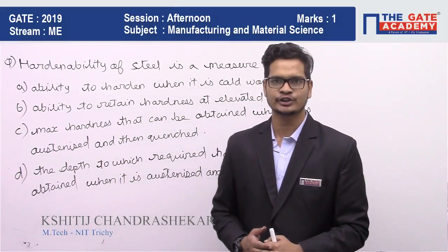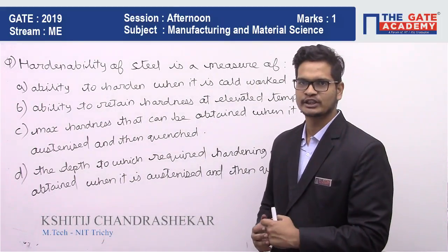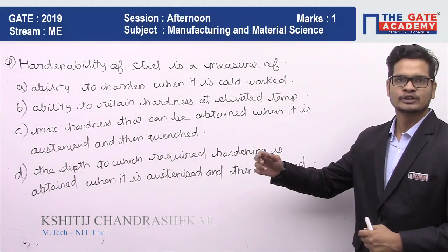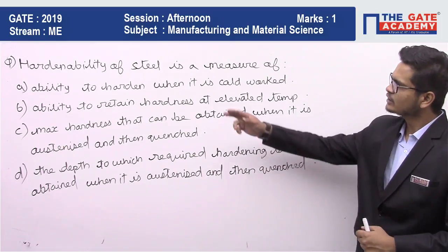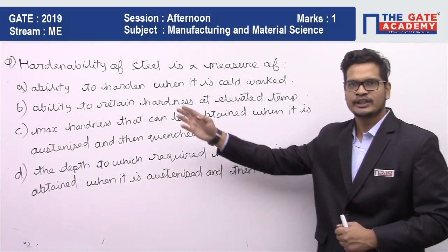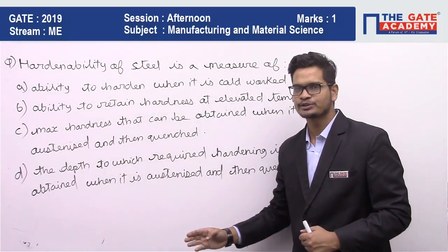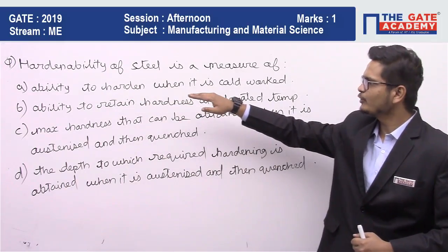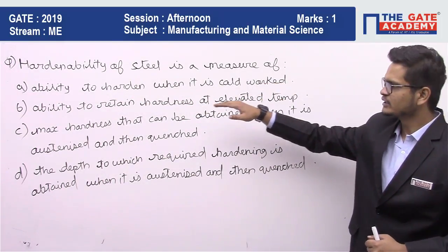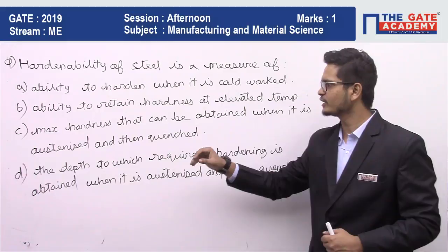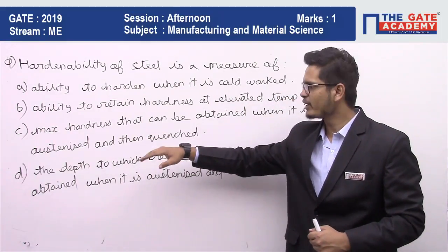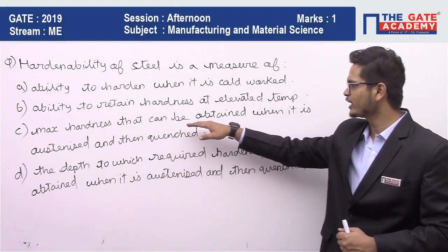Today we will be taking questions from the subject of material science, and the topic is heat treatment. The question is: hardenability of steel is a measure of — they have given us four options. First is ability to harden when it is cold worked. Second is ability to retain hardness at elevated temperature. Third is maximum hardness that can be obtained when it is austenized and then quenched.